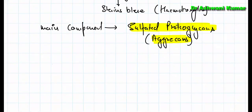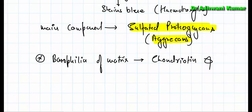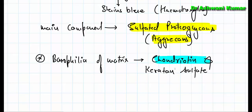The basophilia of the matrix — this intense blue color — is mainly due to the presence of two components: chondroitin sulfate and keratan sulfate. These are responsible for that intense blue color because of their acidic nature.